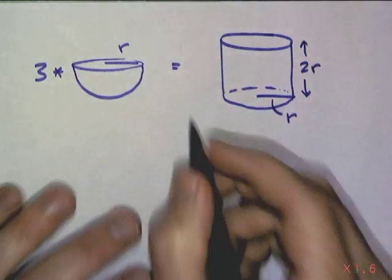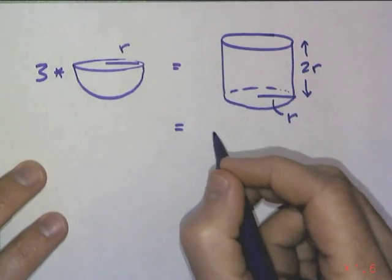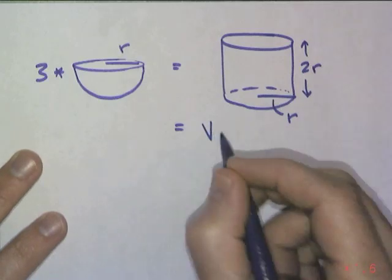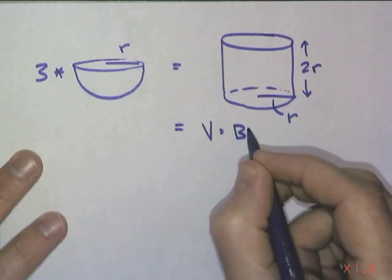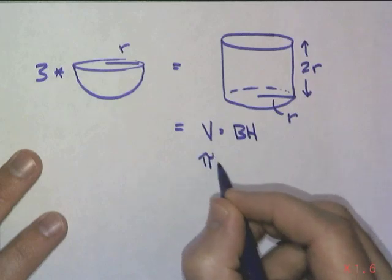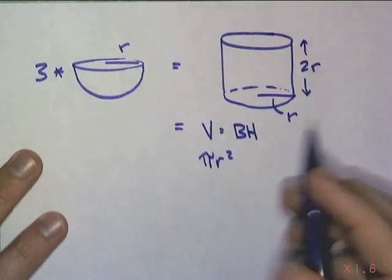And the volume of this is nothing more than... I'll put another equals here. Base times the height. That's area of the base, pi r squared times the height. And how big is the height? It's two r.